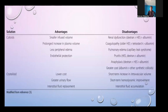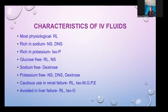Colloids are high molecular weight proteins or large glucose polymers. They don't readily cross the capillary membrane — they stay entirely within the intravascular space and maintain volume. However, they can sometimes cause anaphylaxis or coagulopathy by impairing platelet activity and reducing circulating concentration of clotting factors.